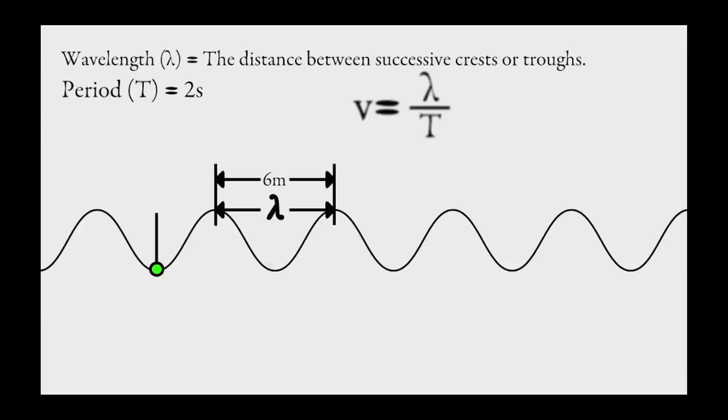So, here's an interesting derivation. If we start with the formula v equals d over t, we know that the distance covered is a wavelength. And the time it takes to cover that distance is called the period. So, now we have v equals lambda over t. Now, if we recall that t equals 1 over f, we can substitute in 1 over f for t, the period.